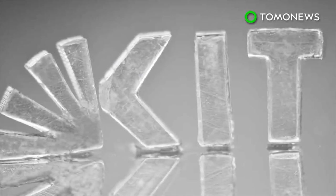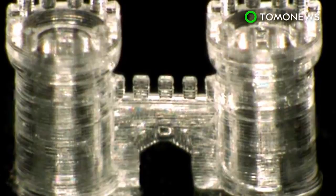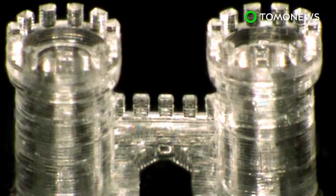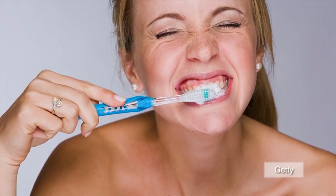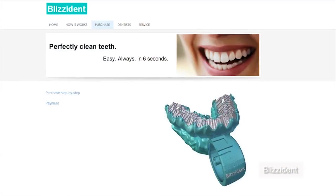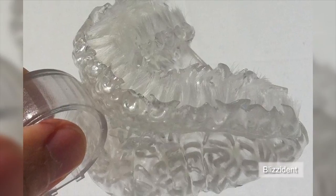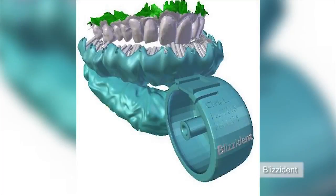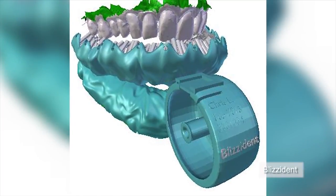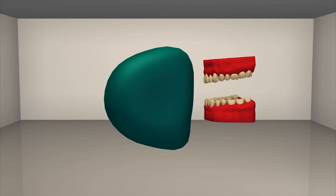The American Dental Association recommends that people brush their teeth at least three to four times each day, but now a company called Blizzident is marketing a device of the same name it says can achieve the same results in only six seconds. A dentist first makes an impression of a patient's teeth using the same technique used to mold braces.